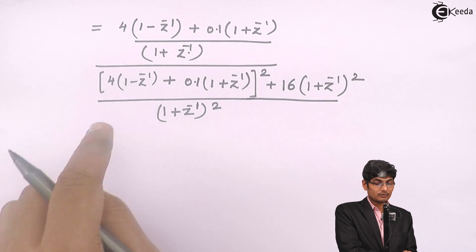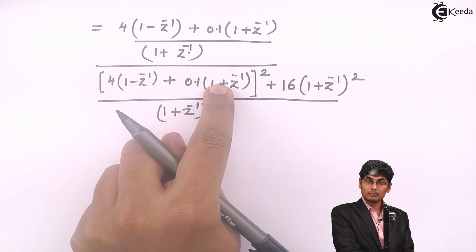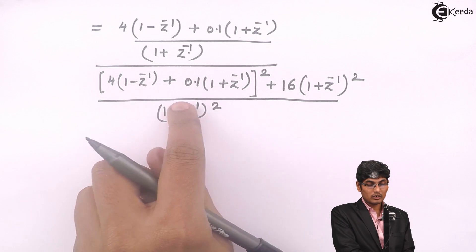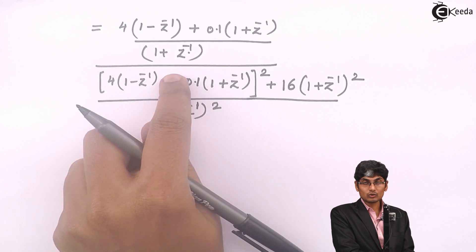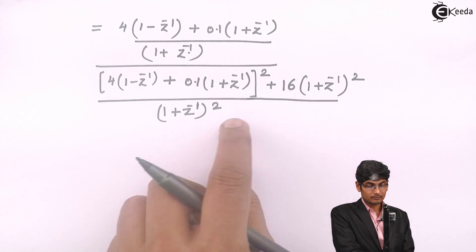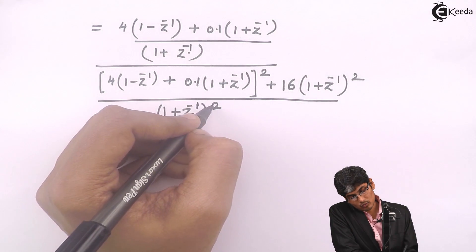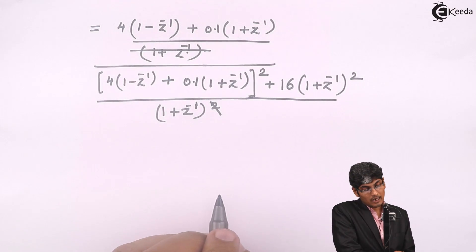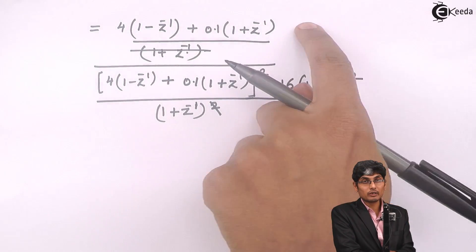What I did was I have brought this denominator multiplied over here, there will be whole denominator I have divided the squares and I have multiplied this over here. Now I will cancel 1 square and 1 plus Z inverse and I will cancel 1 square and 1 plus Z inverse and then this will go in the numerator.